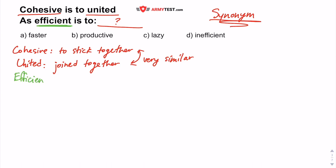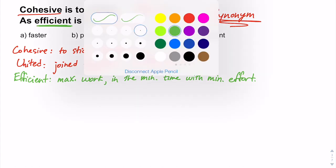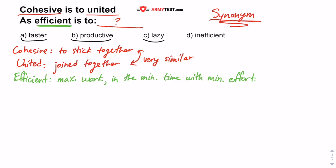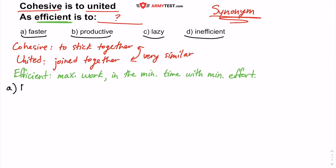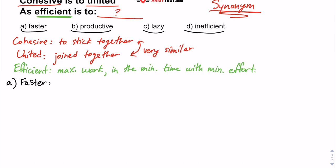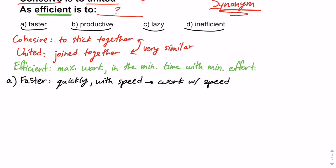What we want to do is define efficient, because we need to come up with a synonym for it. In my own words, efficient means doing the maximum work in the minimum time with minimum effort. Now just as we did in the other question, we're going to go through each option. A. Faster simply means quickly or with speed — to complete work with speed.